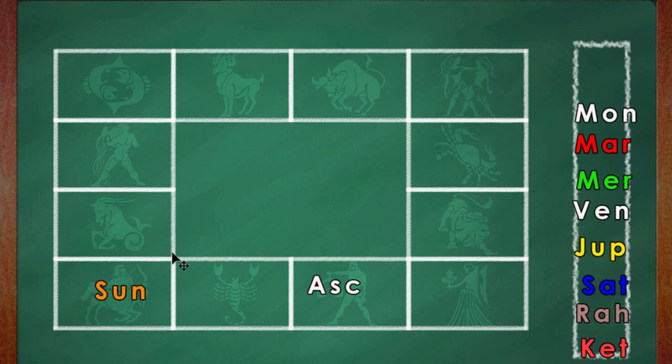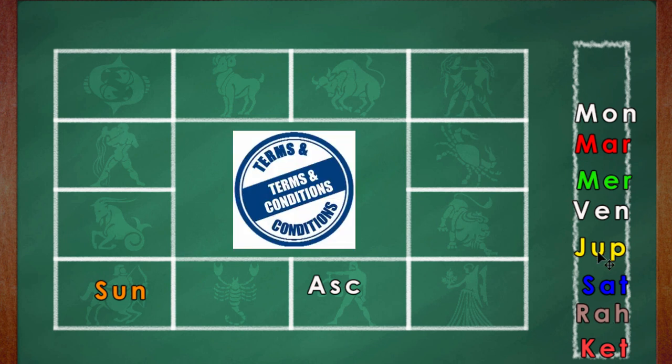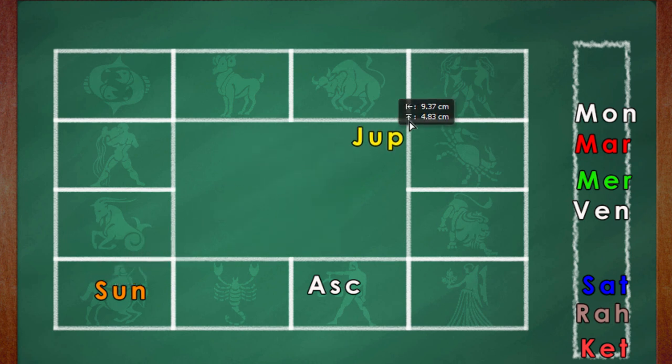If the Sun is associated with the benefic, the brothers will become prosperous. So here something opposite has been declared. Let's introduce Jupiter. Jupiter can be here or maybe here. Whatever negative we have said about the Sun being in the third house will not happen if Jupiter or another benefic is sitting along with the Sun.